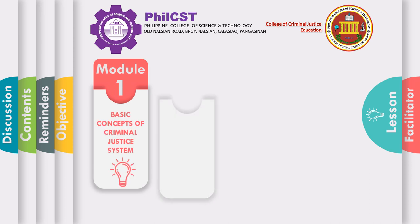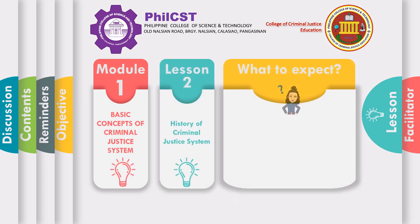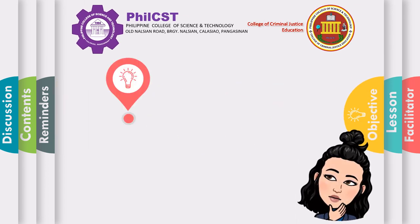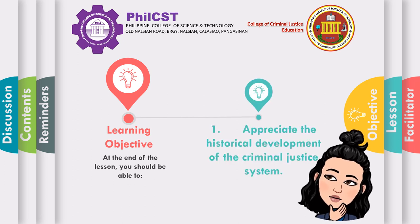We are on Module 1 – Basic Concepts of Criminal Justice System, Lesson 2 – History of Criminal Justice System. Throughout the history of criminal justice, evolving forms of punishment, added rights for offenders and victims, and policy reforms have reflected changing customs, political ideals, and economic conditions. In this lesson, the development of the criminal justice system will be discussed in order to appreciate how past events affected the present situation. At the end of the lesson, you should be able to appreciate the historical development of the criminal justice system.